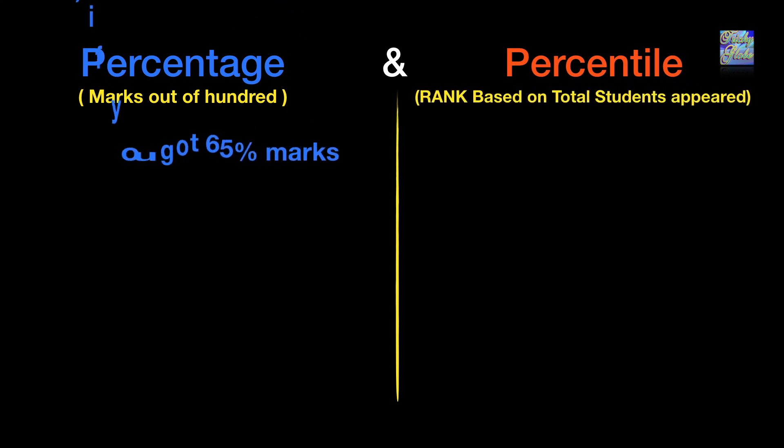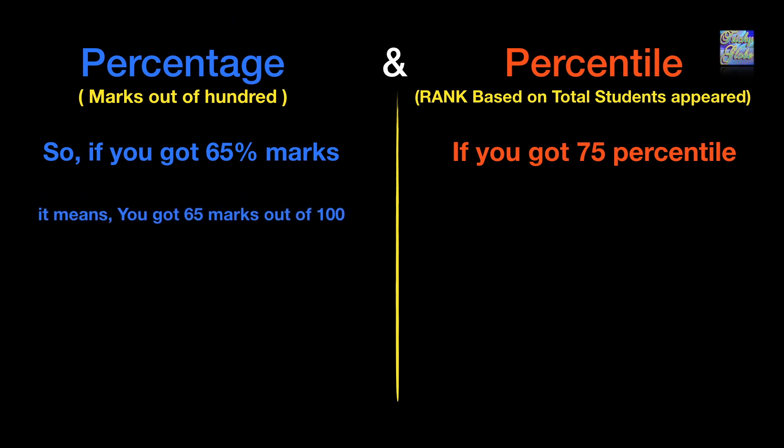So if you got 65% marks and 75 percentile, what is the difference? 65% means you got 65 marks out of 100. If your full marks is 100, you would be getting 65 marks. If it is 75 percentile, it means 75% of the people who appeared in the examination got less marks than you.